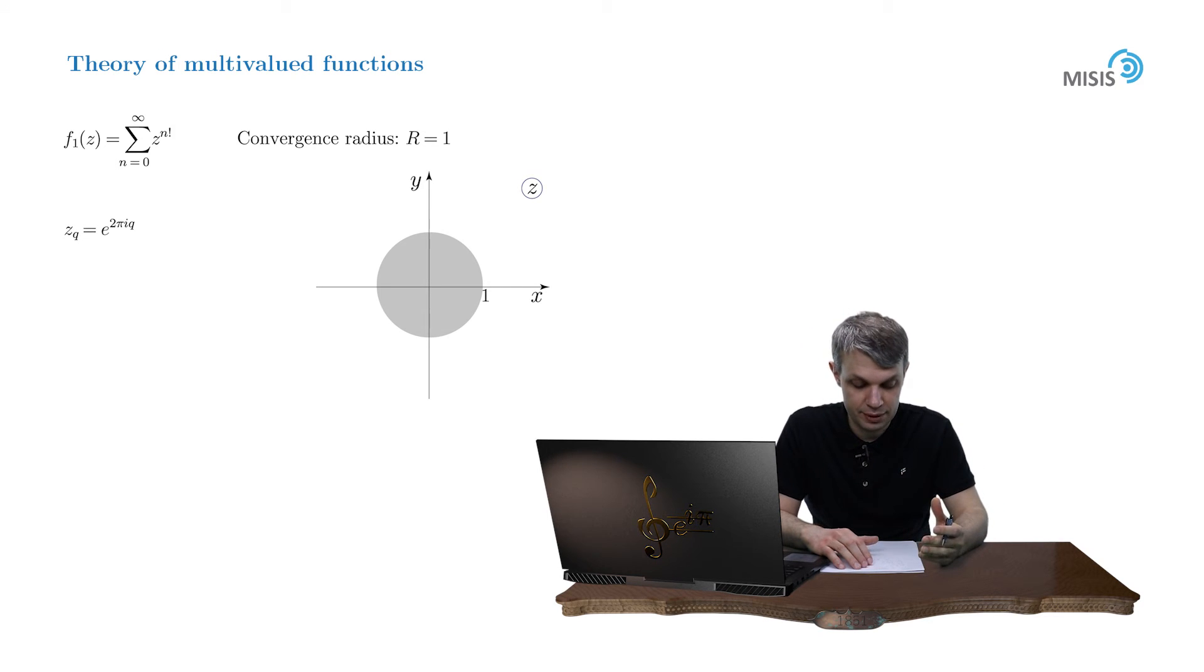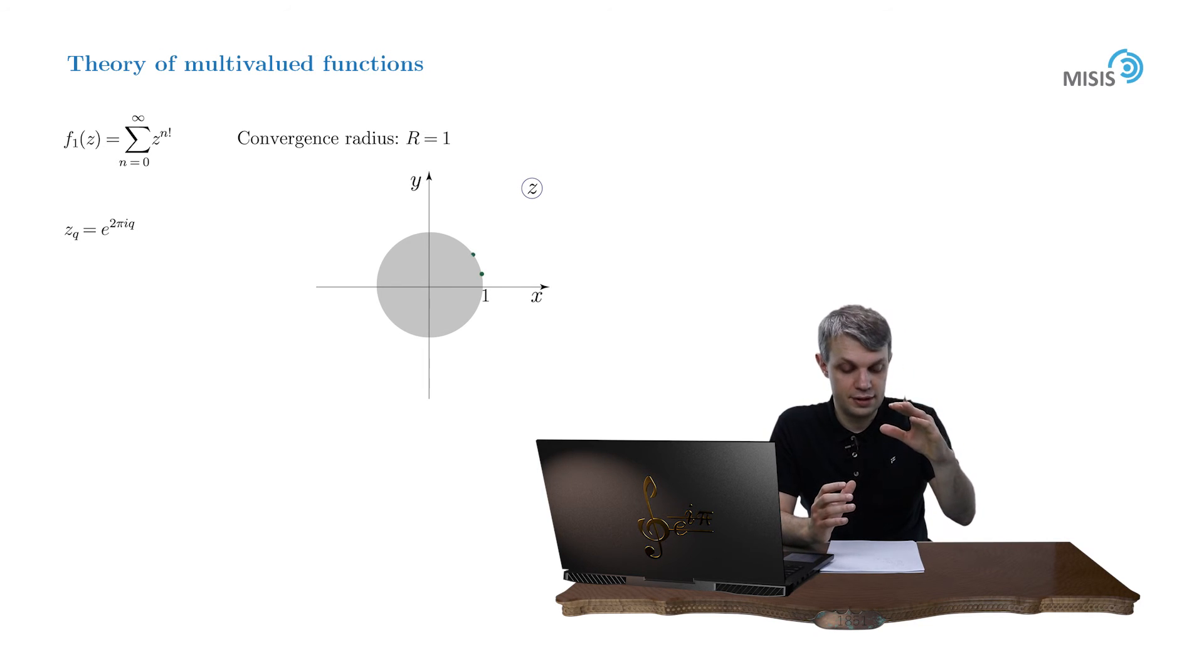But that means that any point on a unit circle of an appearance e to 2πiq, where q is an arbitrary rational number, is a singularity of this function. But from this we conclude that any arc of this unit circle, however small, contains an infinite amount of singularities. And as it happens, one is unable to bypass this fence of singularities and to continue analytically this function anywhere beyond this circle.